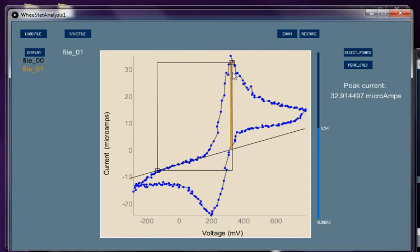Now we have this as our current peak and it says over here 32.9 microamps for the forward anodic peak. So we have one at about 33 microamps.